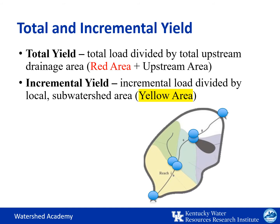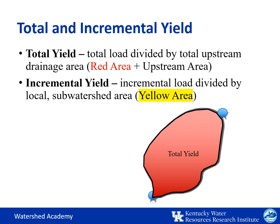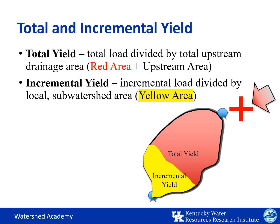Just as you can determine total and incremental loads, you can also determine total and incremental yields. For the total yield, you divide the total load by the area of land draining to that point — for this watershed shaded in red, this is everything in the black outlined area plus the upstream drainage area. For the incremental load of this area, shaded yellow, you divide the incremental yield by this localized drainage area, cutting out contributions from upstream. By doing this, you're better able to understand smaller areas and address localized sources.